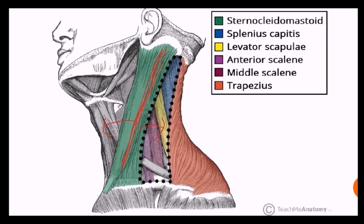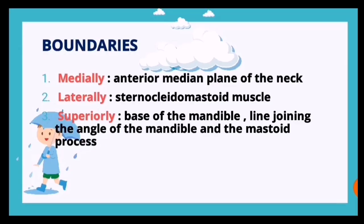In today's session we are going to see in detail about this anterior triangle, which is subdivided into further smaller triangles. The boundaries of the anterior triangle are: medially you have the anterior median plane of the neck, laterally you have the sternocleidomastoid muscle, and superiorly you have the base of the mandible.